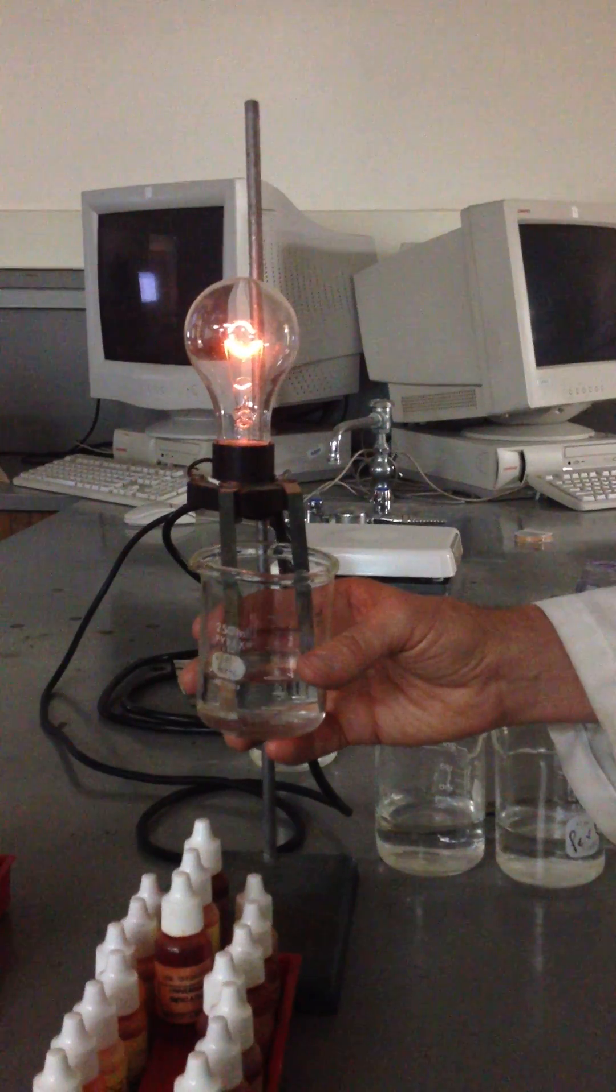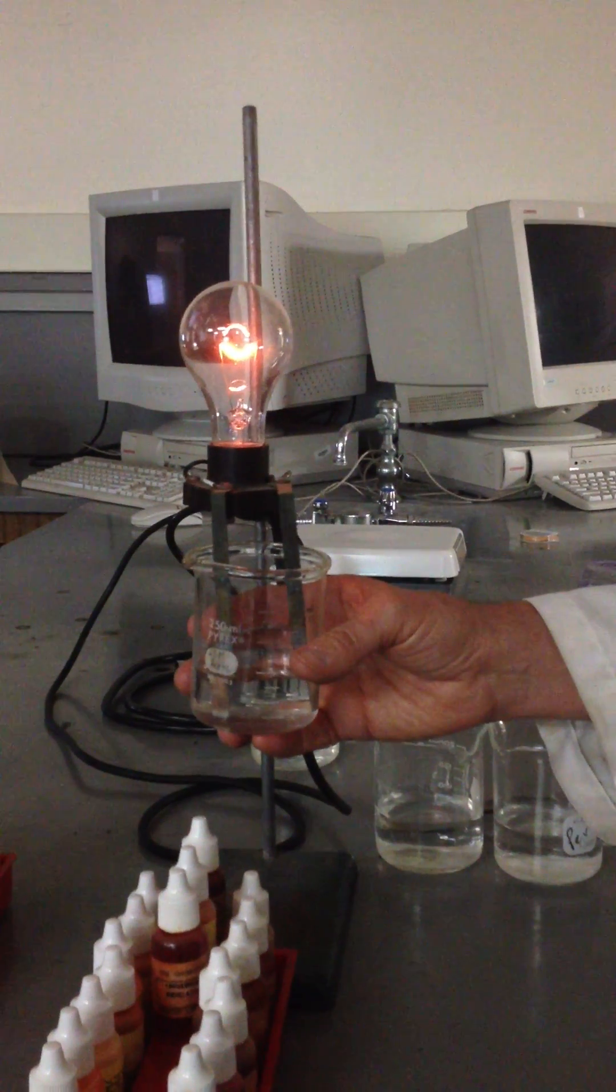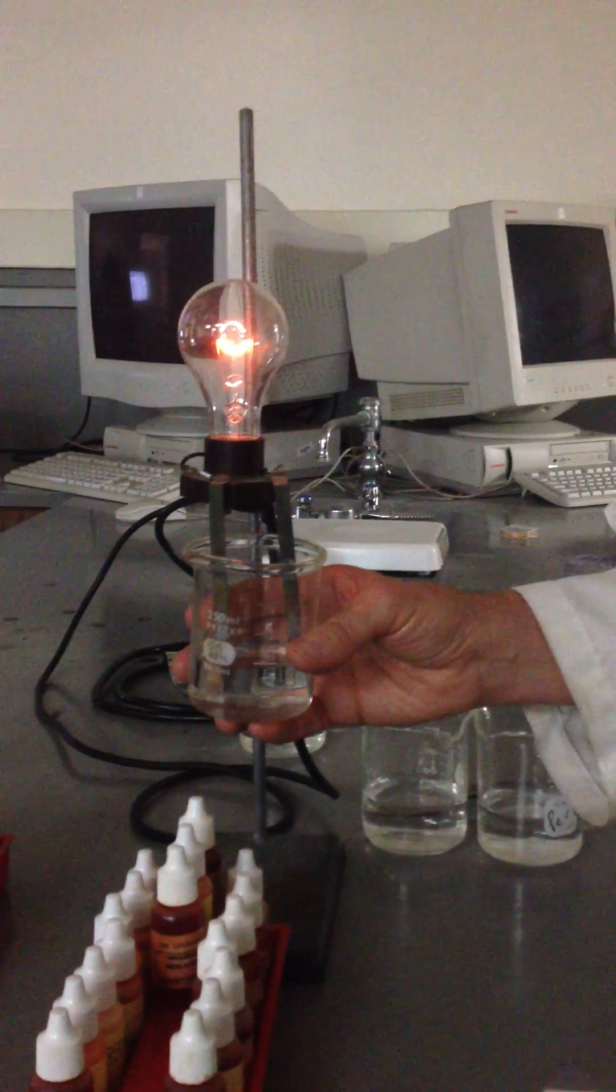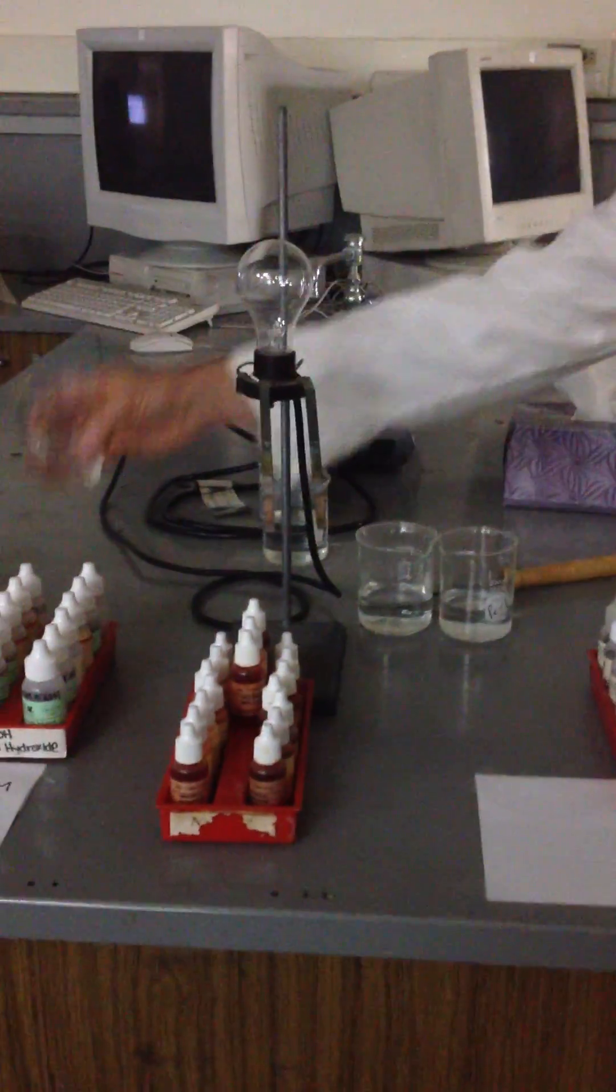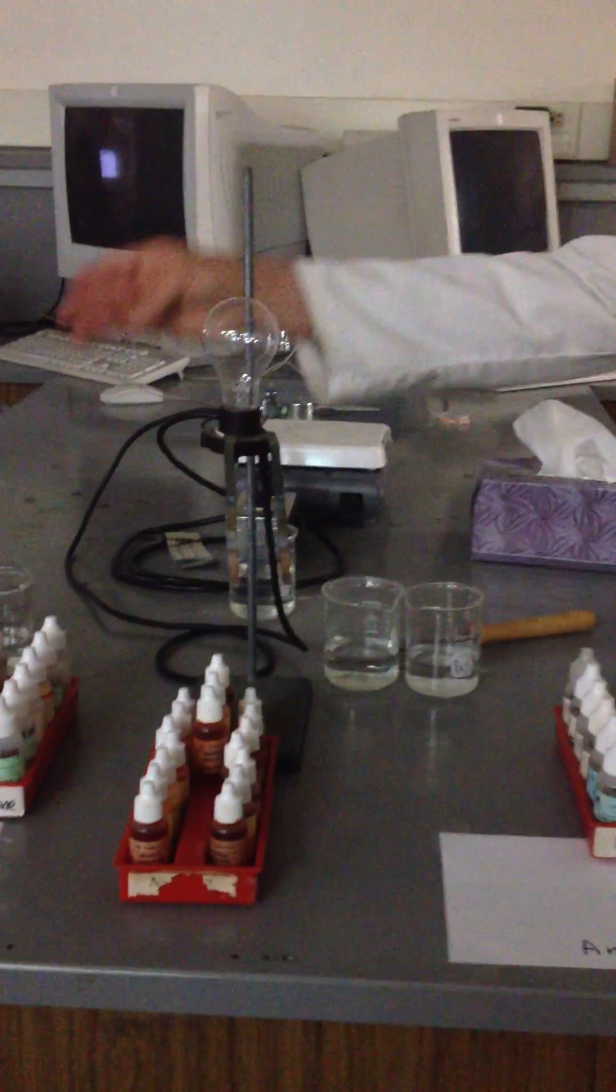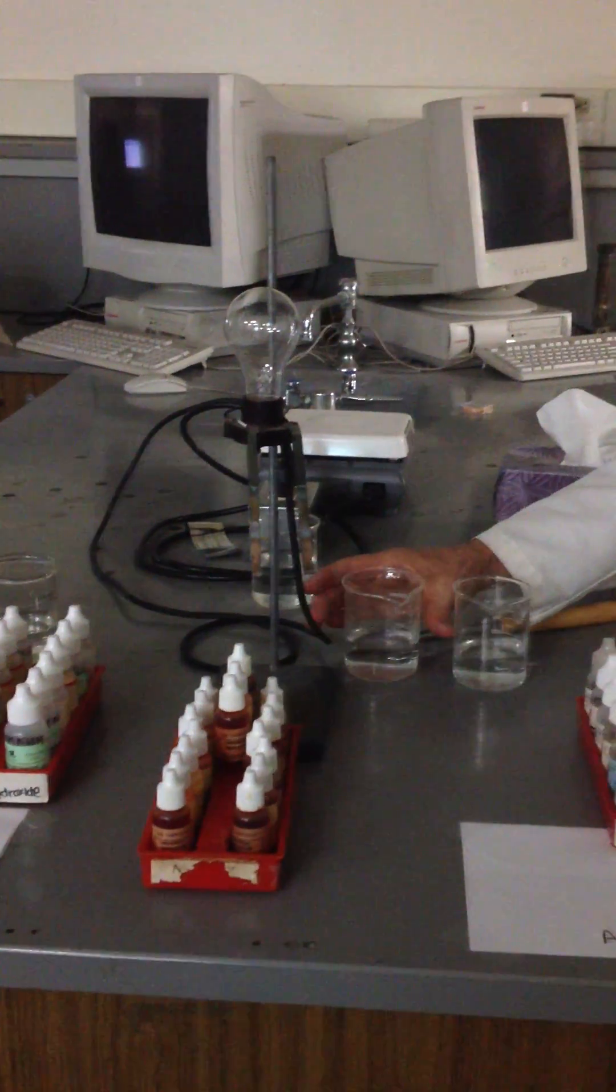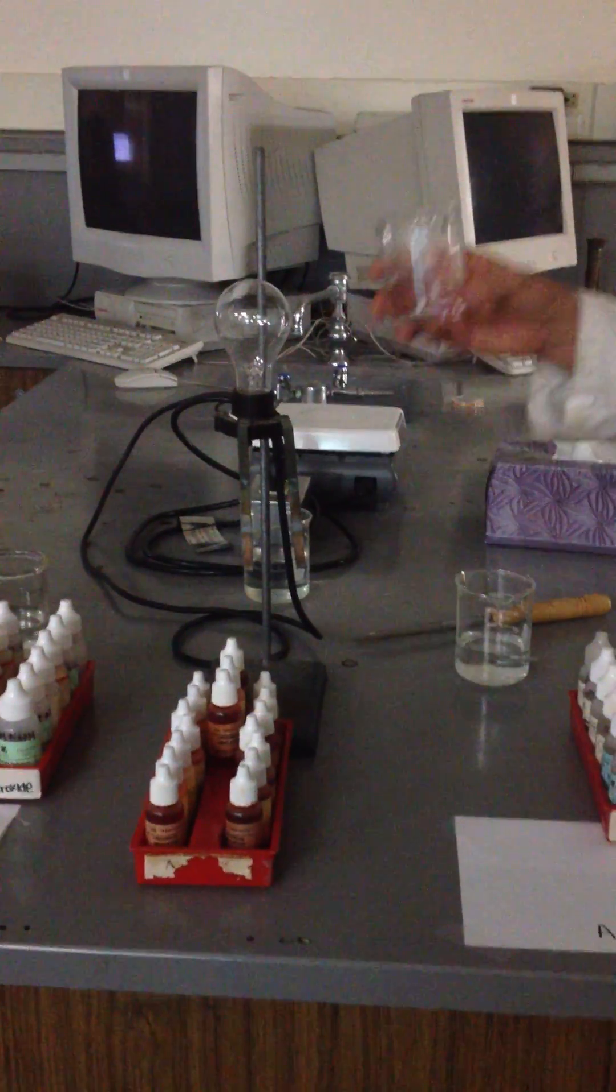What does that mean about the number of ions in the water? Very few. A bunch less. Yes, a bunch less. The brightness of the bulb correlates to the number of ions.